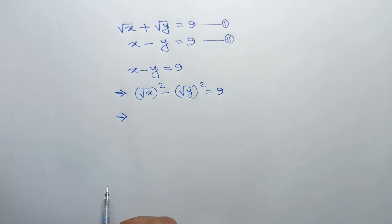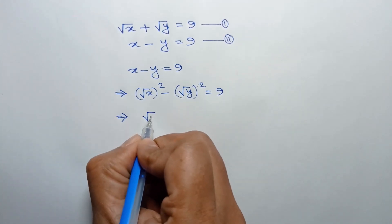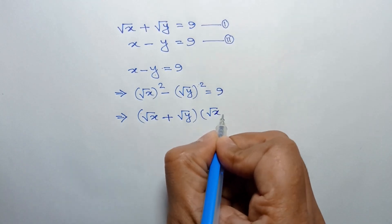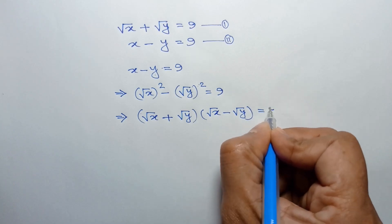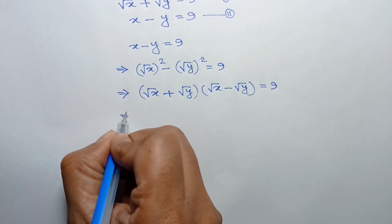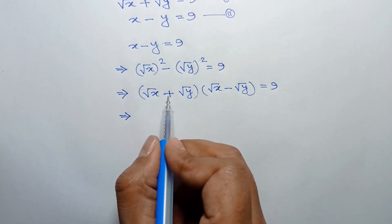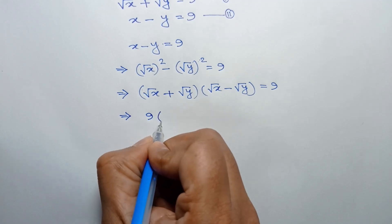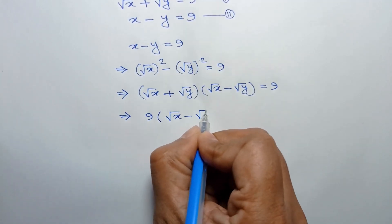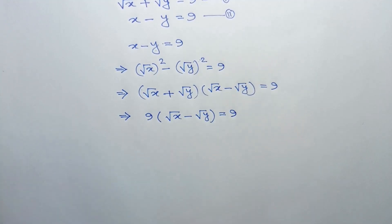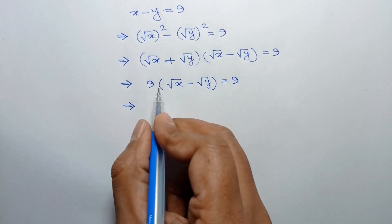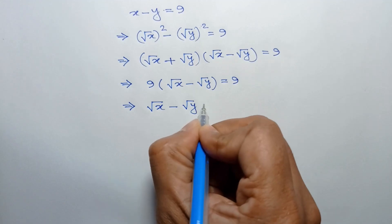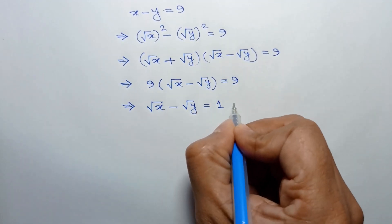Applying the formula a squared minus b squared equals a plus b times a minus b, we can write it as: square root of x plus square root of y, times square root of x minus square root of y, is equal to 9. From equation 1, the value of square root of x plus square root of y is 9. Substituting this value, we get 9 times square root of x minus square root of y equals 9. Dividing both sides by 9, we get square root of x minus square root of y equals 1.